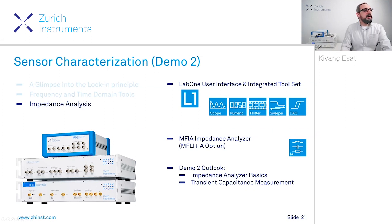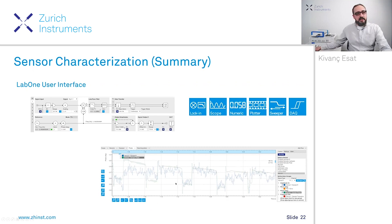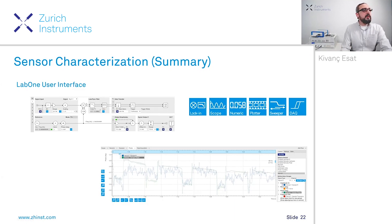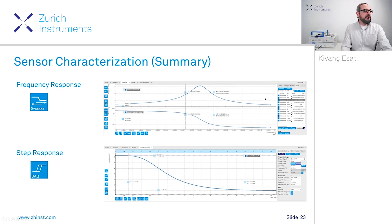We were looking at the Laban user interface and we looked at the Lakin measurements and how they are done. We looked at our resonator as a sensor and examined its response, checking the amplitude and frequency response. We used the sweeper to get the frequency response around the resonance to obtain its quality factor, bandwidth, amplitude, etc. We also looked at the step response.